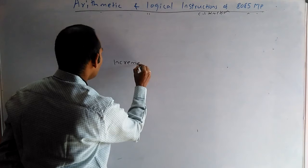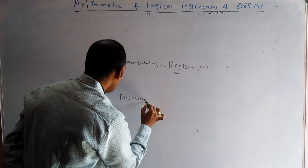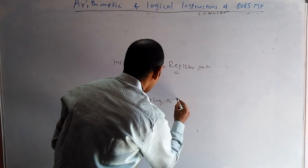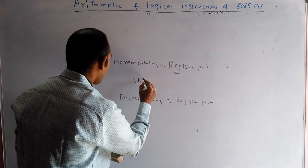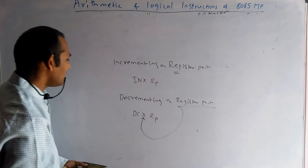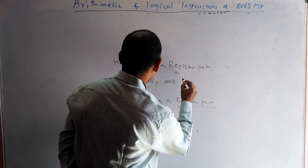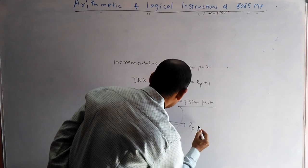There are also increment and decrement instructions for register pairs: INX RP increments a register pair, and DCX RP decrements a register pair. Whenever the instruction contains 'X', that identifies it as a register pair instruction. The entire register pair is incremented or decremented by 1.